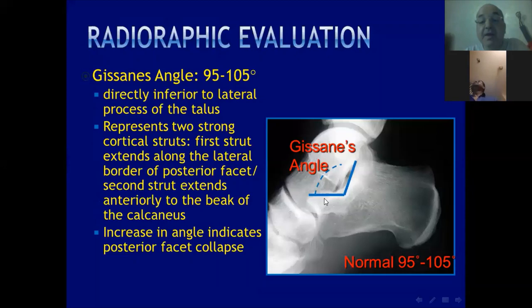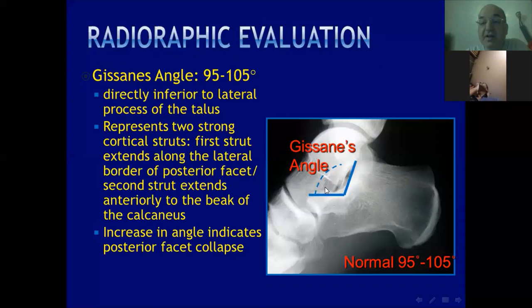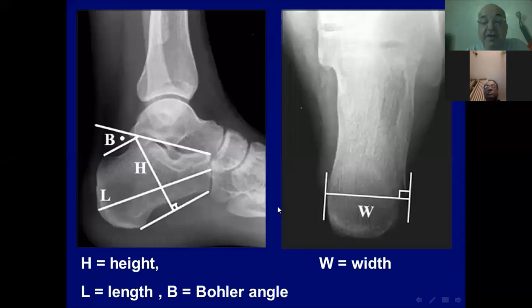The second angle on the lateral view is the angle of Gissane, formed between the lateral border of the posterior facet and a line extending anteriorly to the peak of the calcaneus. This angle is normally about 95 to 105 degrees. If it becomes more obtuse, this indicates collapse of the posterior facet of the subtalar joint. The calcaneus is three-dimensional with width, height, and length — all altered in intra-articular fractures.